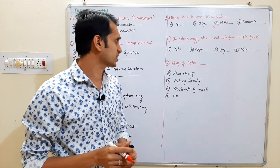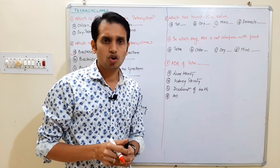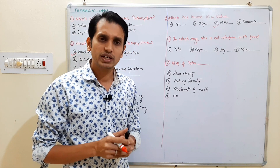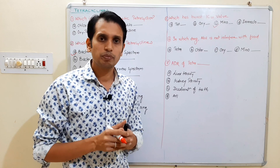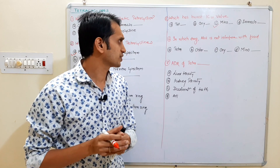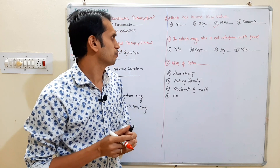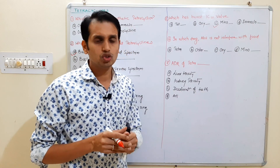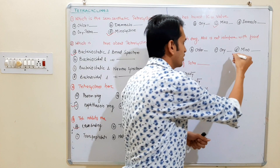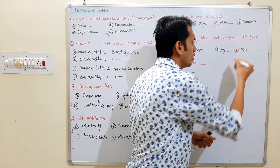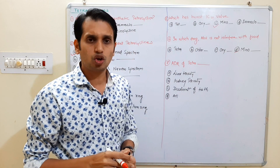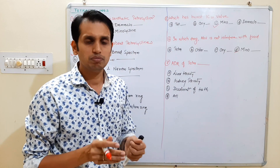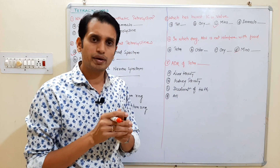Question 6: In which drug is absorption not interfered with by the presence of food? Option A: tetracycline, Option B: chlortetracycline, Option C: oxytetracycline, Option D: minocycline. The answer is D — minocycline and doxycycline do not have food interference. For the rest of the drugs, food can reduce absorption.